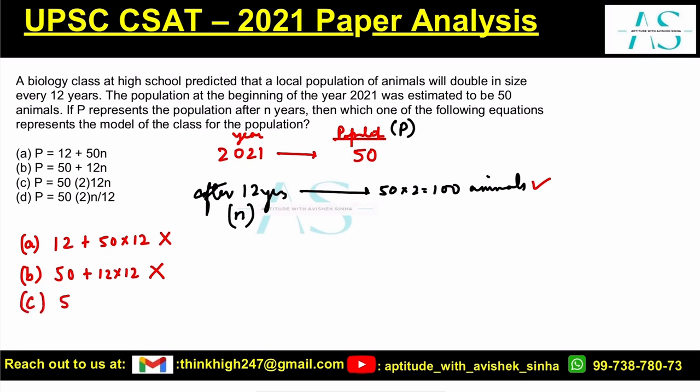Option C: 50 times 2 to the power of 12 times n, that is 12 times 12 — this gives a very large value, not equal to 100.